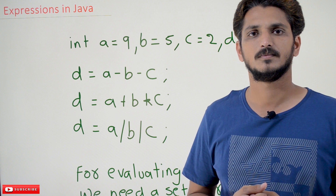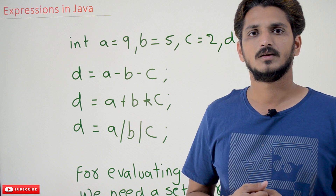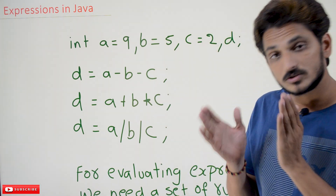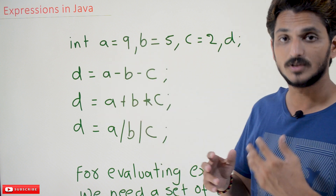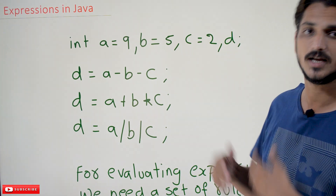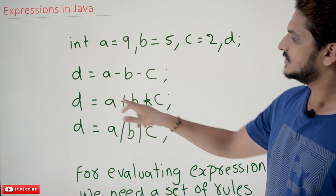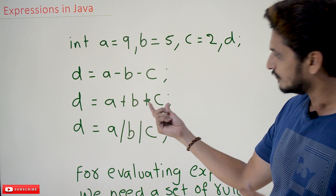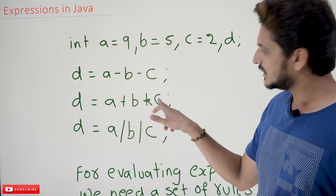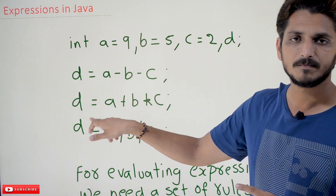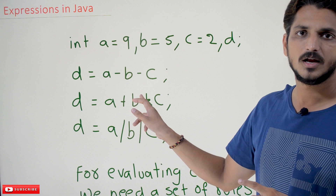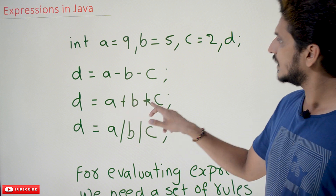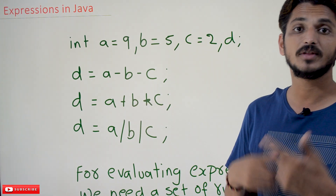All expressions must follow a set of rules and conditions. Let's take one more example: d = a + b * c, which is 9 + 5 * 2. If multiplication is done first: 5 * 2 = 10, then 9 + 10 = 19. If addition is done first: 9 + 5 = 14, then 14 * 2 = 28. So different evaluation orders give different outputs.